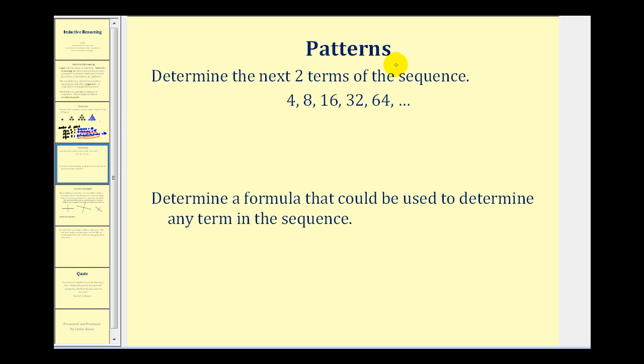Let's take a look at another pattern question. Here we want to determine the next two terms of the sequence. So if we call this the first term, second term, third term, fourth term, fifth term, it's pretty common to state the information as a sub one, meaning the first term is four. Second term, a sub two would be eight, and so on. So we're actually looking for a sub six and a sub seven for the next two terms. Analyzing the pattern here, notice as we progress through the sequence, we're multiplying by two each time.